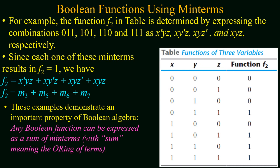In the second example, we again have a truth table for three variables and output function f2, and we have to make a boolean function using min terms. Our first step is to identify all binary combinations of the input for which the output function is equal to 1. Looking at the table, for binary combinations 0,1,1 and 1,1,0 and 1,1,1 and 1,0,1 the output function has a value of 1. For these combinations we will make min terms: for 0,1,1 the min term is x'yz; for 1,1,0 the min term is xy'z; for 1,1,0 the min term is xyz'; and for 1,1,1 the min term is xyz.